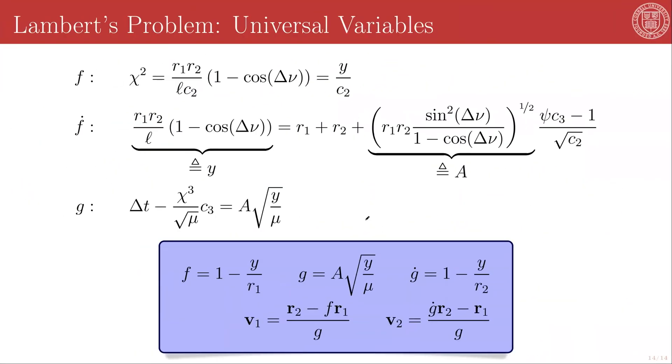So to summarize, what we have so far is that the f function can be written as 1 minus y over r1, g can be written as A times the square root of y over mu, and g dot can be written as 1 minus y over r2, where y and A are defined in terms of r1, r2, and delta nu, which are all part of the problem definition when solving the Lambert problem. Y is also a function of the semi-parameter of the transfer orbit, which represents the only unknown in these two variables.